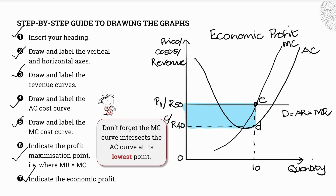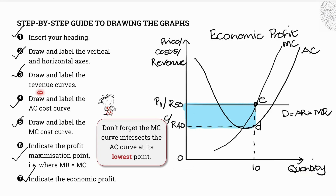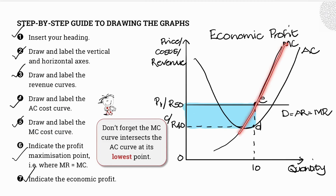Let's recap: insert your heading — done; draw and label your vertical and horizontal axes — done; draw and label the revenue curves — done; draw the average cost curve — done; draw and label the marginal cost curve — done; indicate the profit maximization point, where MC intersects MR — done; and we clearly illustrated our economic profit, highlighted in blue.